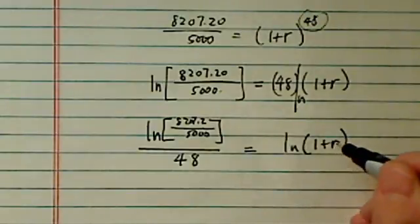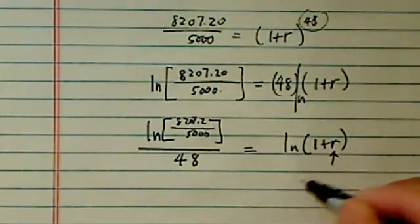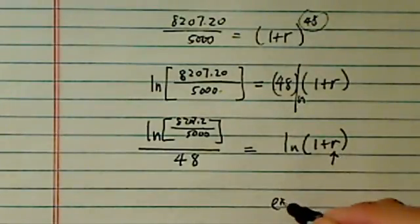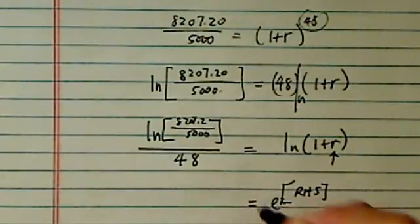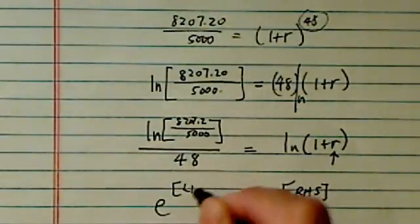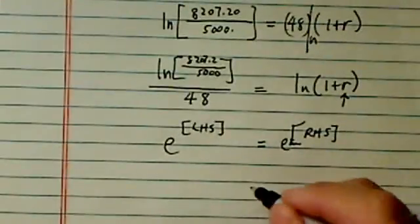Once we get over here, in order to dig this R out again, we have to take e to the right-hand side as equal to e to the left-hand side. Okay, now this does get pretty intimidating.